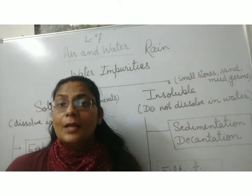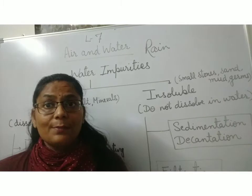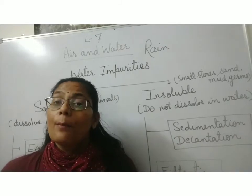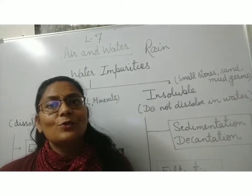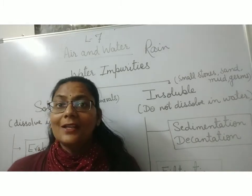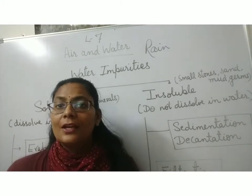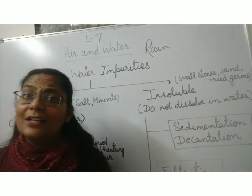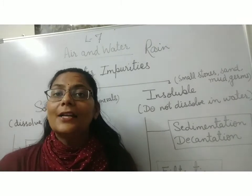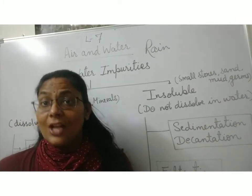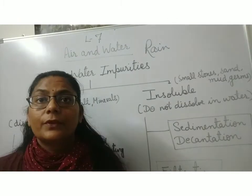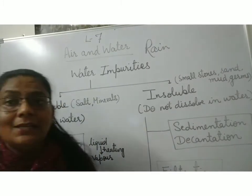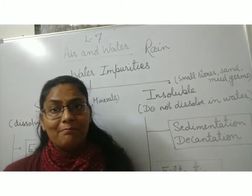Nowadays, in place of that, what are we using? We are using many chemical methods or RO water purifiers at our homes. Most families are using RO water purifiers. Chemically also, we remove impurities from water — like chlorine. Other than that, in some cases, we use ultraviolet radiations to purify water, which comes into the RO system itself.